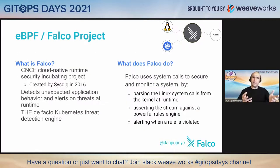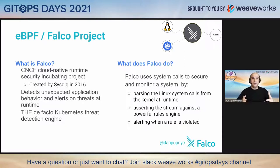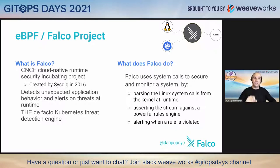Now let's talk about Falco. Falco is a CNCF cloud native runtime security incubating project. We're also in the process of graduation. It was created by Sysdig in 2016. It basically detects unexpected application behavior and alerts on threats at runtime. Falco uses system calls to secure and monitor systems by parsing syscalls from the kernel at runtime, asserting a stream against a powerful rules engine, and then alerting when a rule is violated.